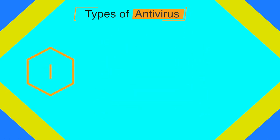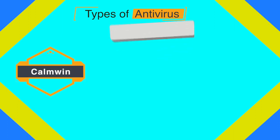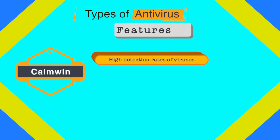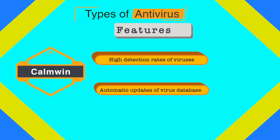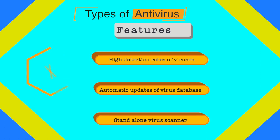The next antivirus is ClamWin, an open-source free antivirus program for Windows. It features high detection rates for viruses, automatic downloads of regularly updated virus databases, and a standalone virus scanner. It does not include an on-access real-time scanner, but it still offers features in its free version that other products reserve for paid versions.